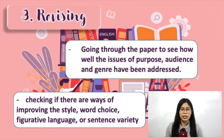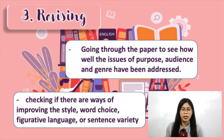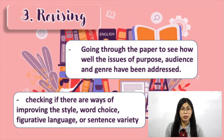The next stage is revising. Revising is going through the paper to see how well the issues of purpose, audience, and genre have been addressed. It also deals with checking if there are ways of improving the style, word choice, figurative language, or sentence variety. According to thinkwritten.com, revising is changing the meaning or the way in which the reader perceives, experiences, and interprets it. Here, you add new thoughts or clarify existing thoughts, choose more descriptive words, improve overall understanding of ideas presented, enhance character development, add more detail, and eliminate unnecessary elements. These are all done to make the text stronger and improve clarity for the readers.